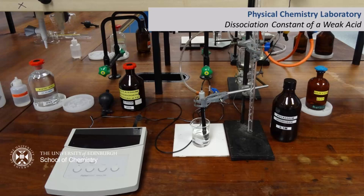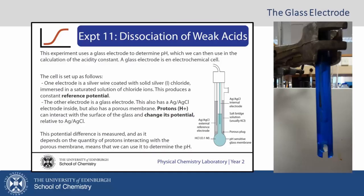Welcome to this experiment on the dissociation constant of a weak acid. In this experiment we are going to use the glass electrode. The glass electrode is essentially an electrochemical cell and it is set up as follows.